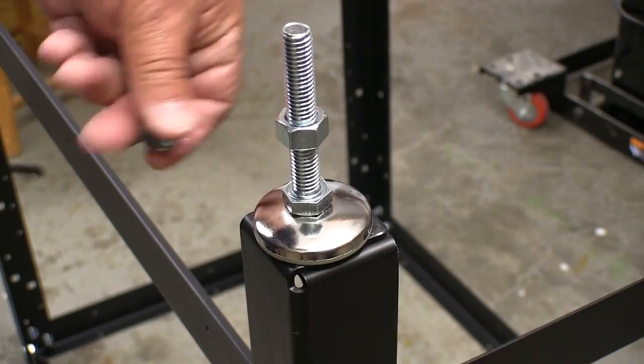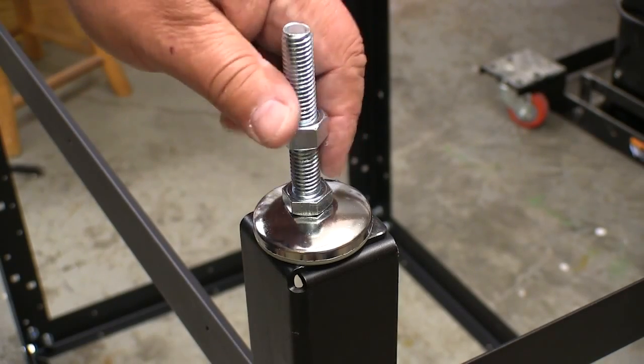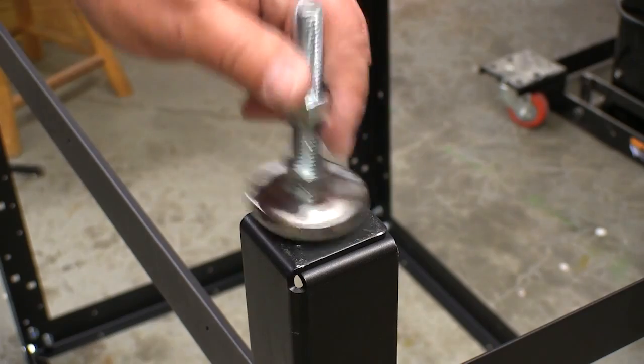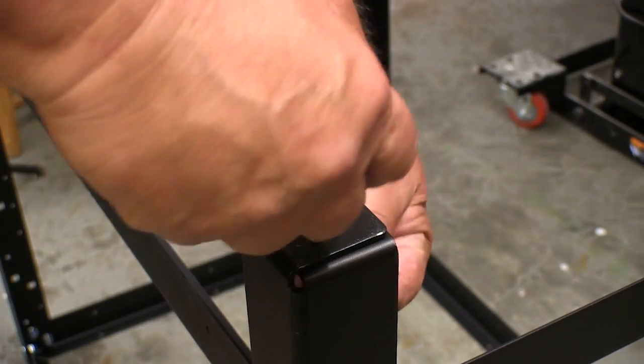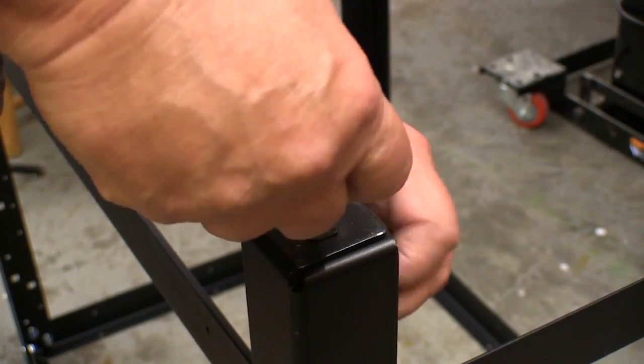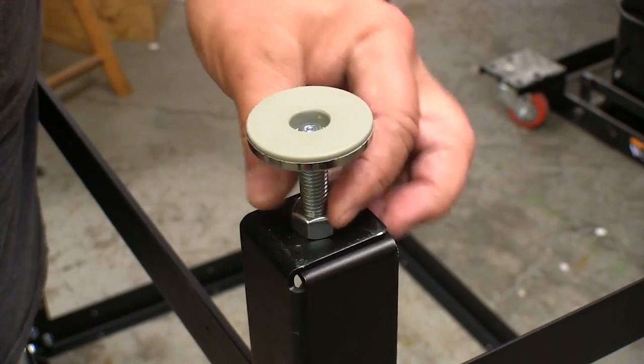The Rockler shop stand comes with these adjustable rubber-soled feet. You can adjust their height individually to get the table sitting flat on a not-so-flat surface or to adjust the overall height a little bit as well.